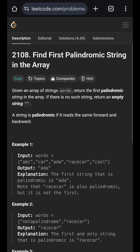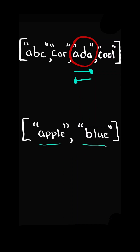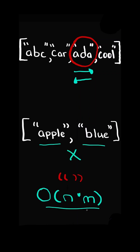Find the first palindromic string in the array. Given a list of strings, we want to return the first palindromic string. A palindrome is a string read the same forward and backward. If there are no palindromic strings in the array, then we return an empty string.